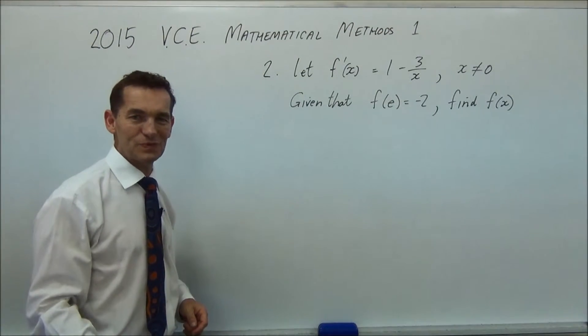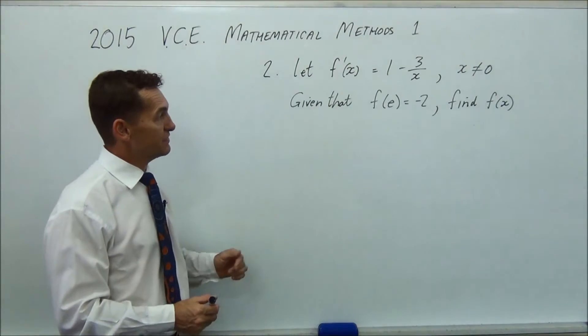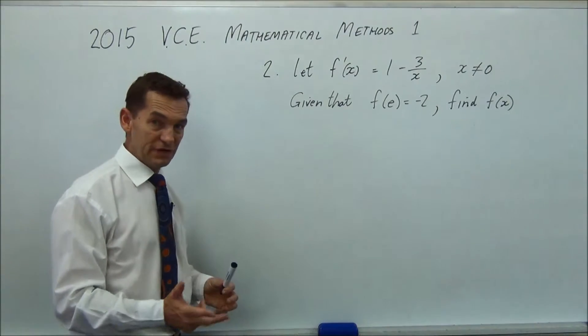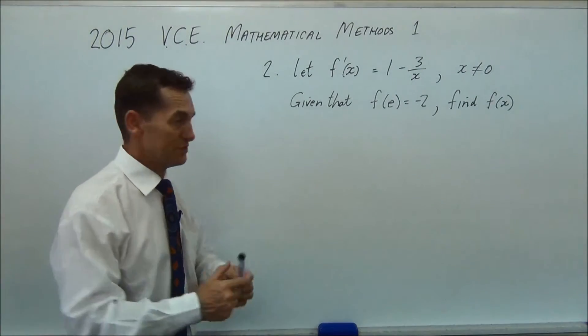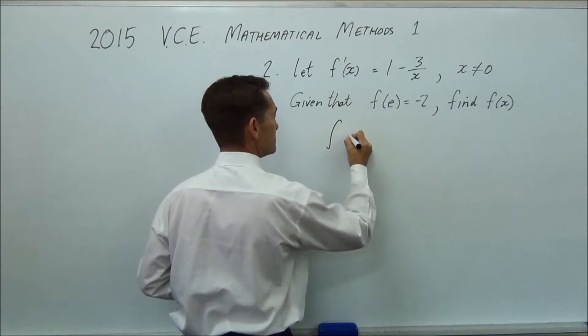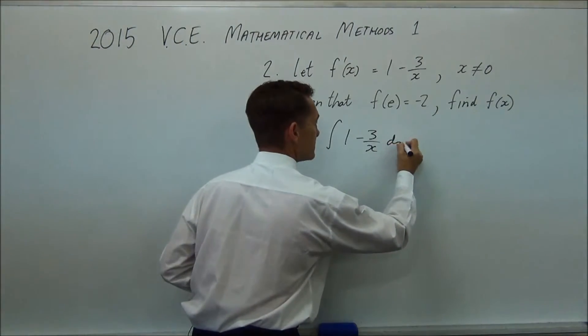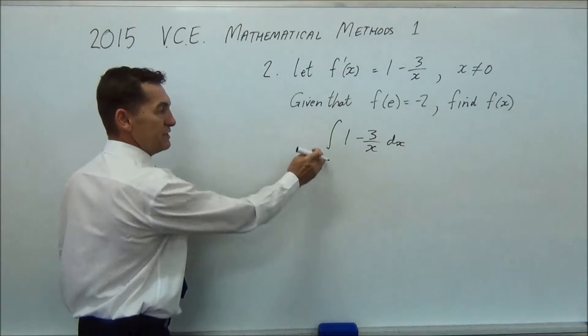G'day again. Question 2. Let f'(x) equal 1 minus 3 over x. Given that f(e) equals minus 2, find f(x). So question 1 we differentiated, question 2 you're going to integrate. So really the question is that, with a dx there. So really that's the start of your question. So let's do that. If you integrate 1, very simple, you get x.